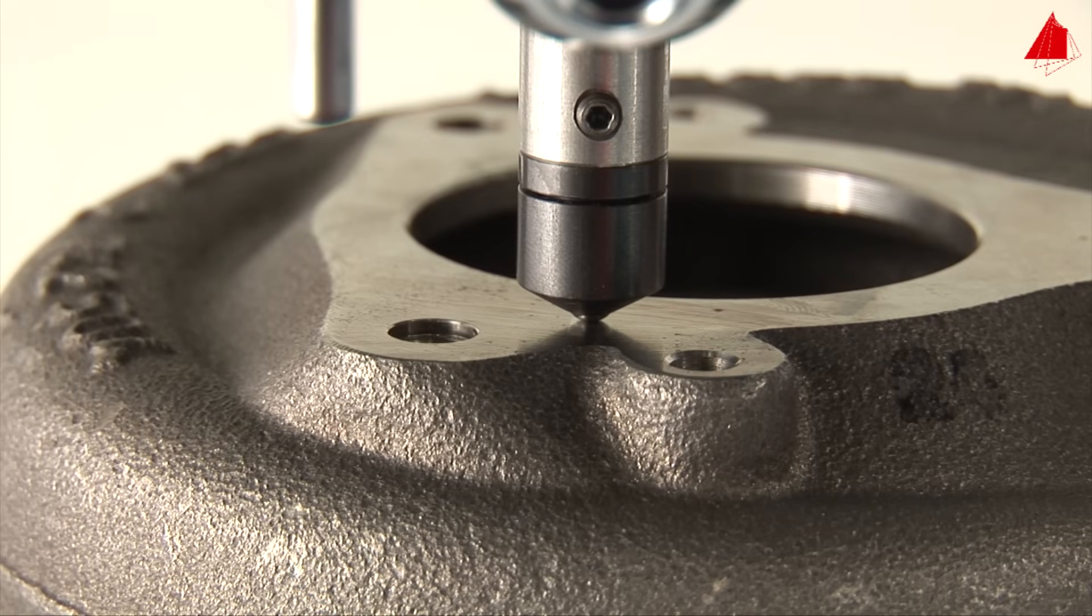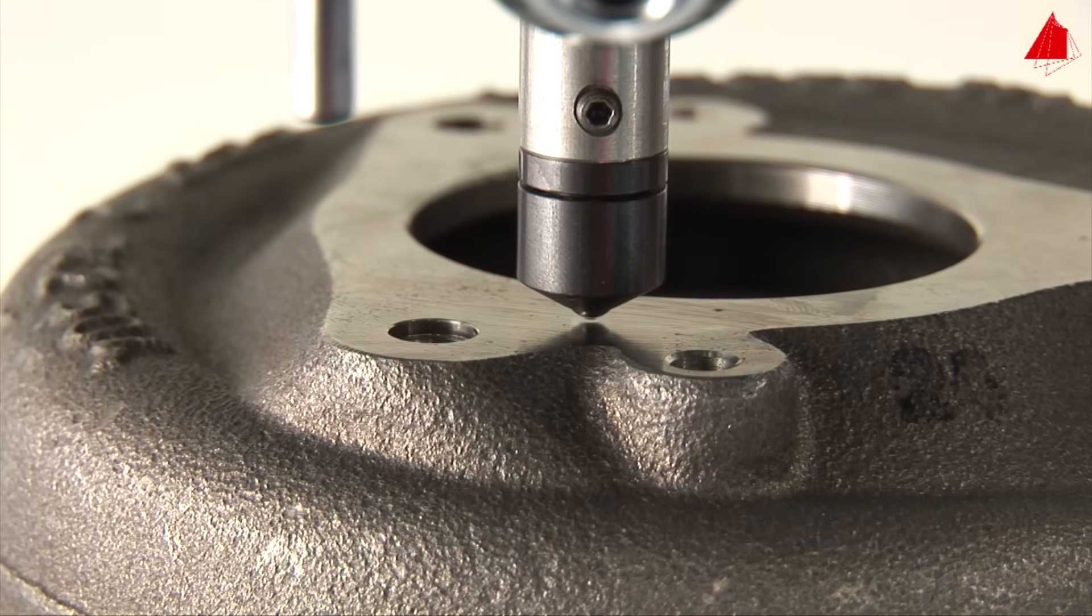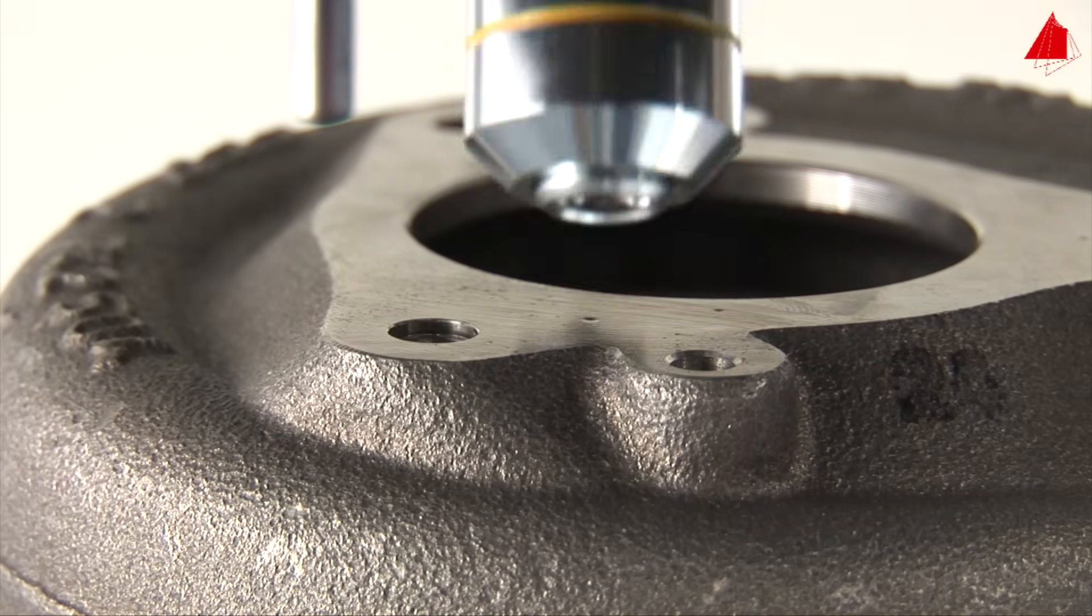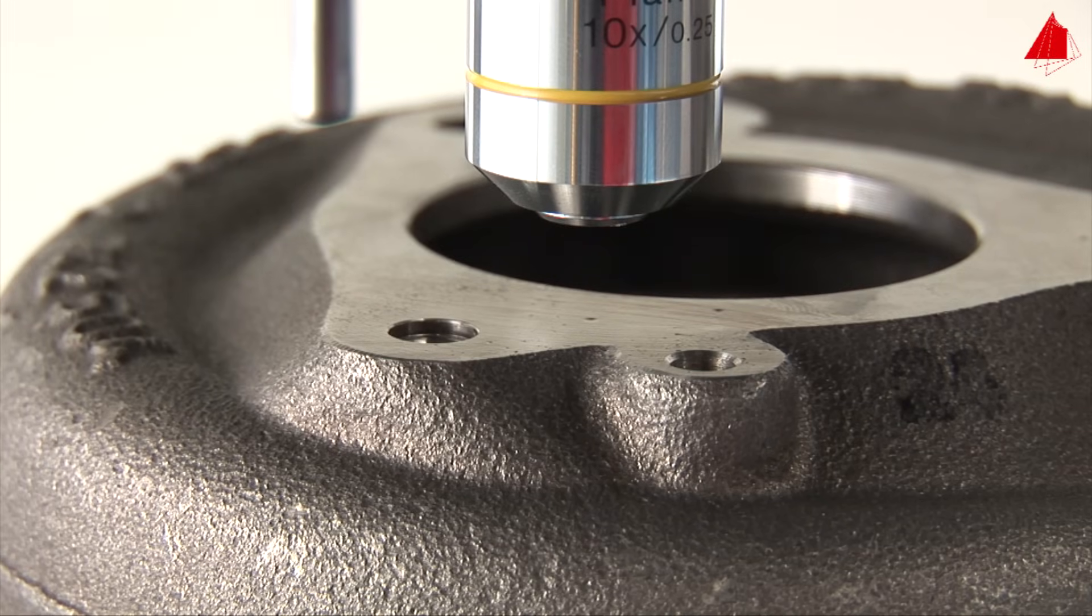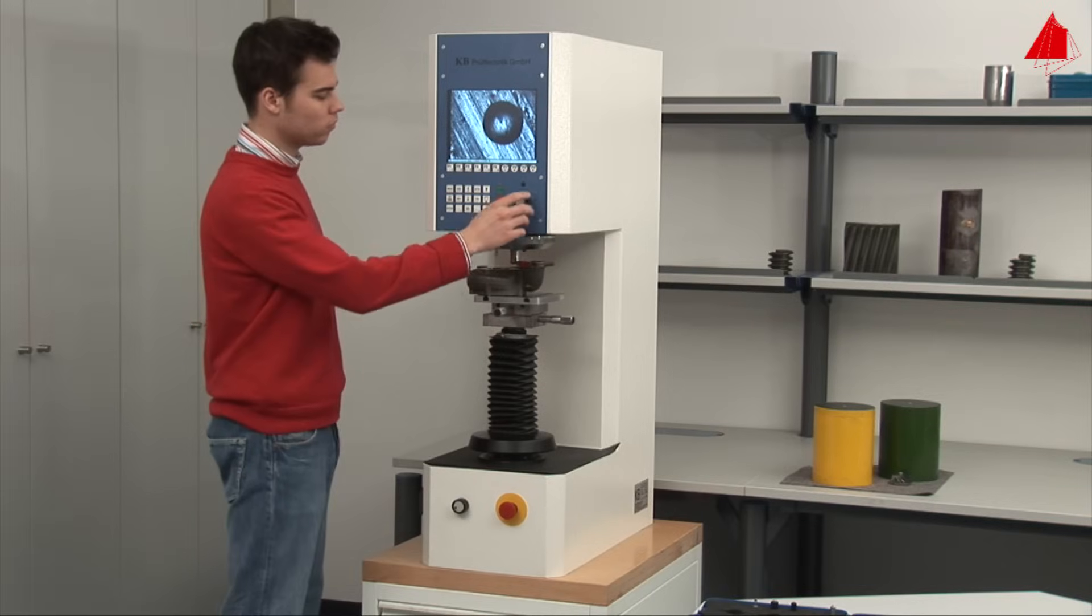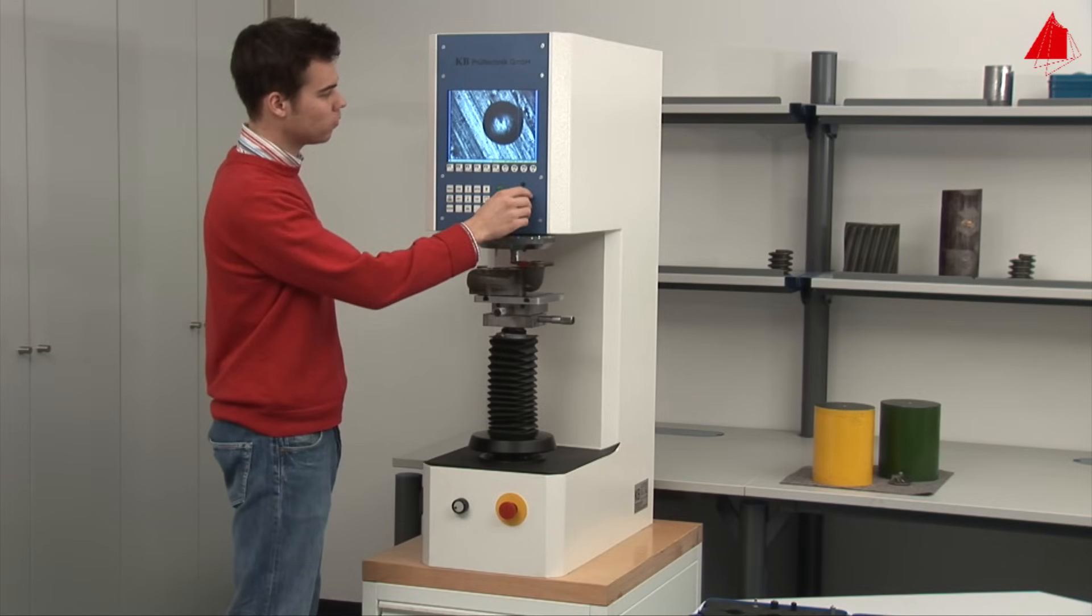After maintaining the test force for a certain time, the indenter automatically lifts off again and the microscope lens pans back to its former position. The indentation can now clearly be seen on the monitor.